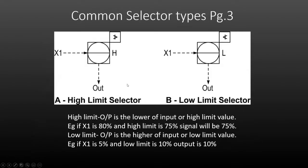Beyond these basic ones, there are a couple of others we'll look at. Image A shows the symbol with the greater than sign with a line in it, indicating a high limit selector. A high limit selector is going to select either the lower of the input or a high limit value that we program into the selector.